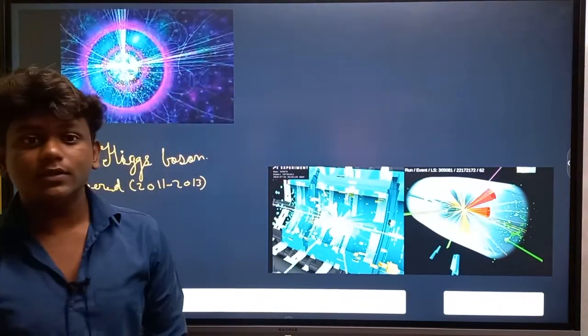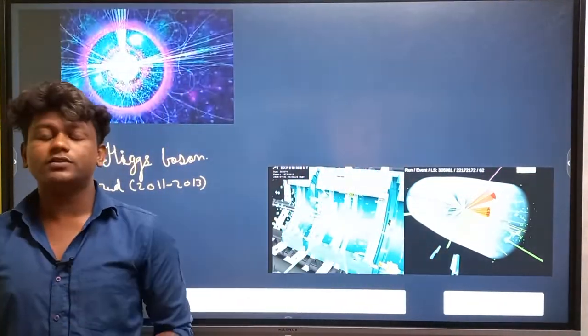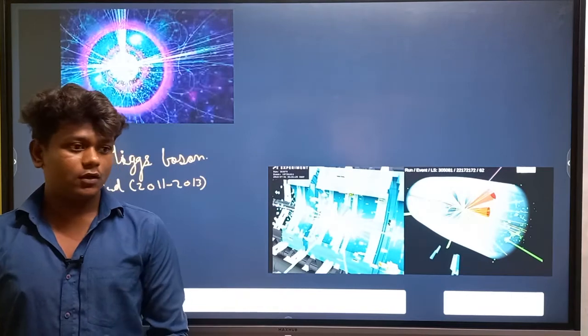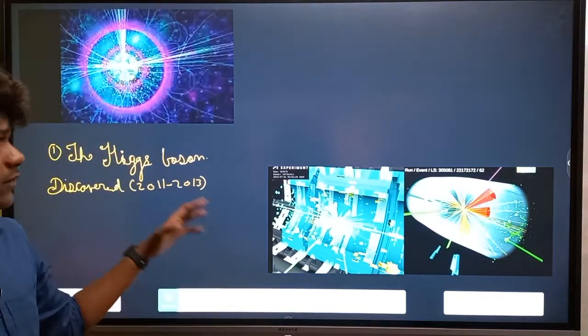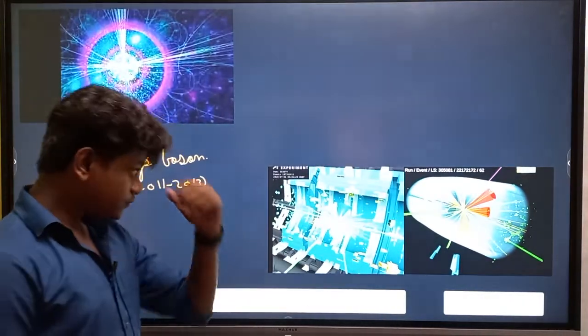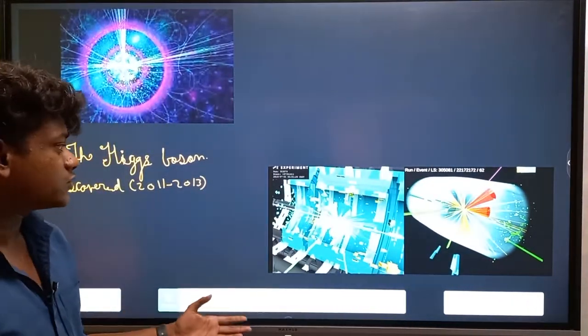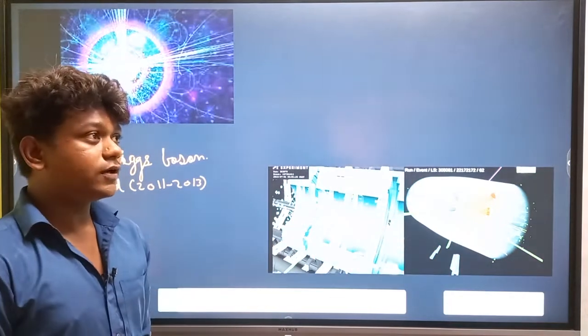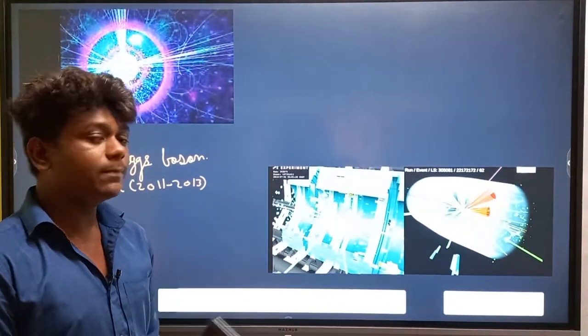The God Particle is actually a dark matter which NASA explored some time before, only seven to eight years ago. And it is also called the God Particle because it was discovered, it was invented after the Big Bang.